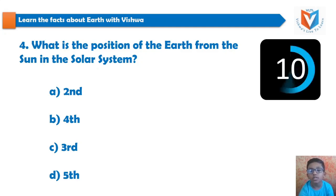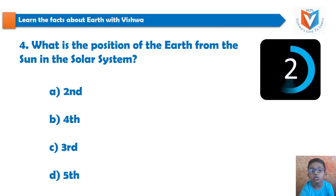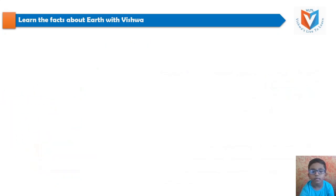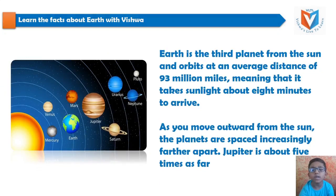Your time starts now. 10, 9, 8, 7, 6, 5, 4, 3, 2, 1. Time's up. And the answer is 3rd. Earth is the third planet from the Sun and orbits at an average distance of 93 million miles, meaning that it takes sunlight about 8 minutes to arrive. As you move outward from the Sun, the planets are spaced increasingly farther apart. Jupiter is about 5 times as far.